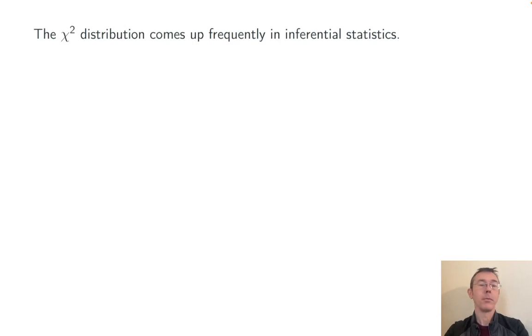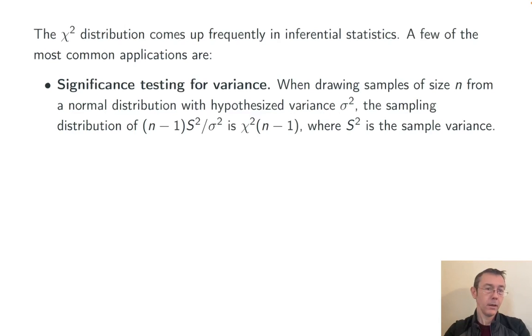The chi-squared distribution comes up all the time in inferential statistics, as you had guessed from that very first slide. Here's a couple of the most common uses. Significance testing for variance. When drawing samples of size n from a normal distribution with hypothesized variance σ², the sampling distribution of (n-1)S²/σ² is χ²(n-1), where S² is the sample variance.